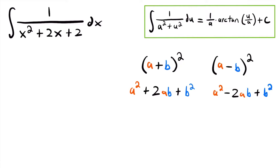What we want to do is get the quadratic function in the denominator of our integral to be in one of these two perfect square forms. As it currently stands, the quadratic is not in that form — it is not a perfect square. In fact, it cannot even be factored in its current form, because there are no factors of positive two that when added together equal the coefficient of the middle term.